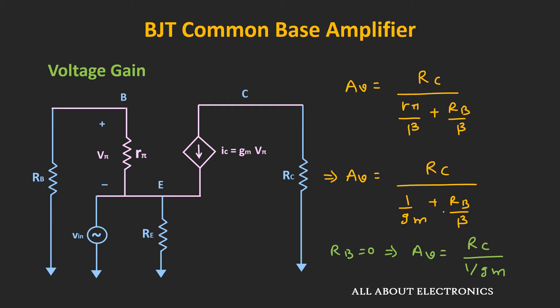This is the expression of the voltage gain. And if you see, there is no negative sign, which indicates that the input and the output signals are in the same phase. Here, if this base resistor Rb is 0, then the voltage gain is the same as the common emitter amplifier — that is, GM times RC. But because of this base resistor, the voltage gain reduces. At the later part of the video, we will see how we can nullify the effect of this base resistor and how we can improve the voltage gain.